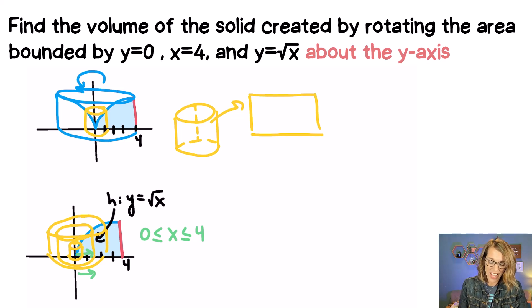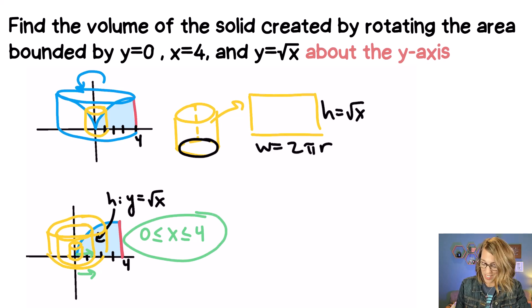So that rectangle has my height and that height is the square root of x, but that width is really the circumference of that circle. So the width is going to be 2πr and the r that we had is that x value. So I can say for this example that my width is equal to 2πx.